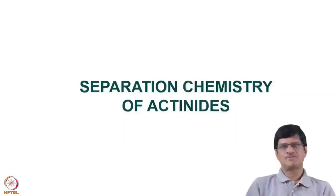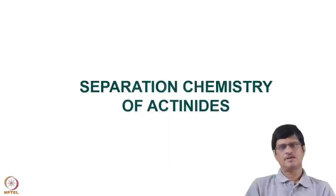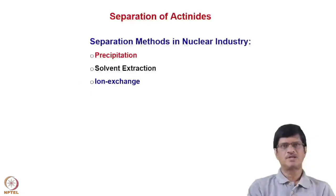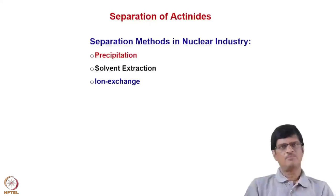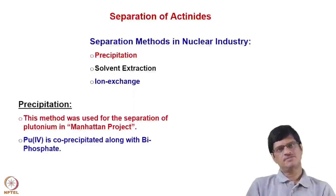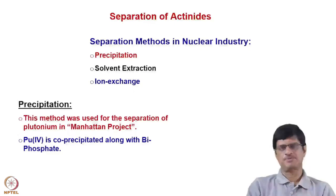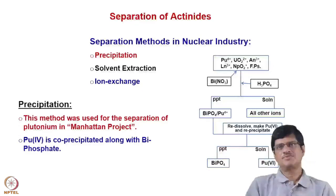After learning the complexation of actinides with inorganic as well as organic ligands, we see their separation chemistry and this has application in the nuclear fuel cycle. The separation of actinides in the nuclear industry is mostly based on precipitation, solvent extraction, and ion exchange. Precipitation was used in the Manhattan Project where plutonium separation was done by the bismuth phosphate process.